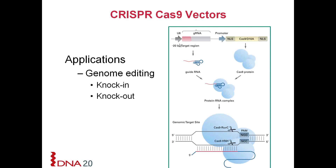It works by using a U6 promoter to drive the guide RNA scaffold. This scaffold consists of a 20-base pair region attached to another region that provides the scaffold region you see in the blue area of this icon. In the next part of the vector, there is a promoter driving the expression of the Cas9 protein or nickase mutant of Cas9. We offer a variety of promoters for different host systems to help control the expression of the Cas9 protein. This guide RNA sequence is called the guide RNA because it drives the Cas9 protein to the particular region of the genome you would like to edit via a 20-base pair target region.